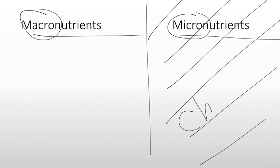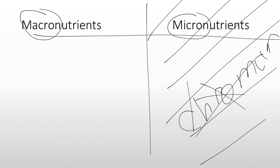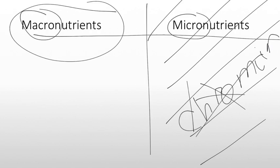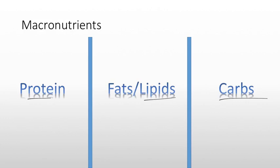I say it's simplified because there are things in micronutrients that help your body increase your metabolic rate — for example, chromium, which helps in sugar metabolism. But by eating more or less chromium, you're not really going to change how much you weigh. If you just focus on macronutrients, you will change how much you weigh and your overall health. There are three main macronutrients: proteins, lipids, and carbs.